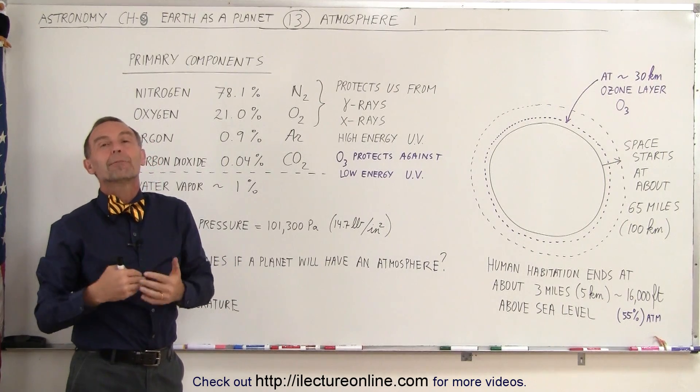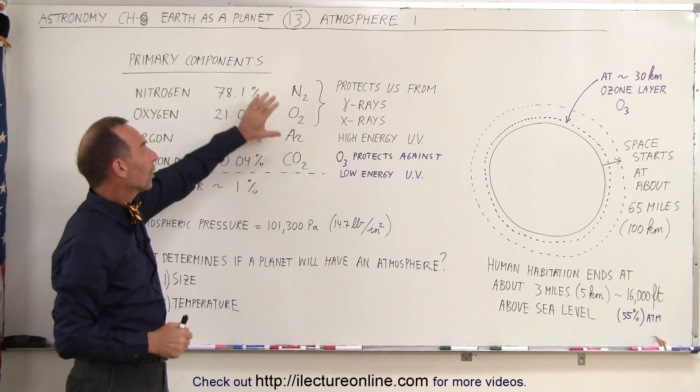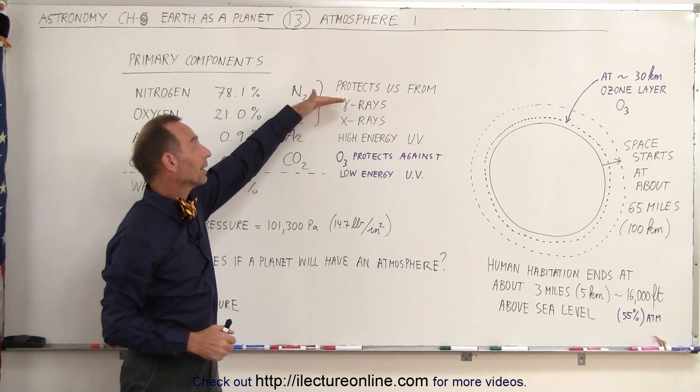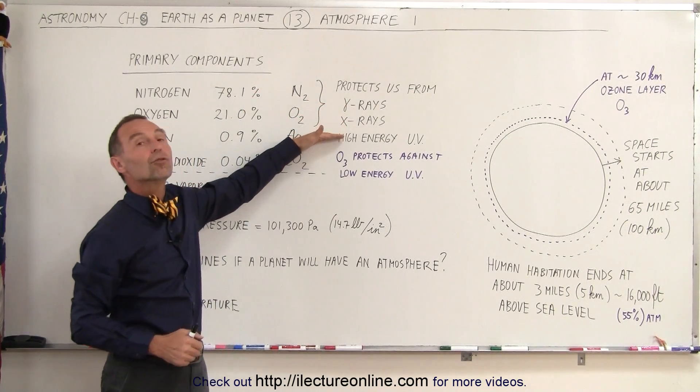Those rays do not reach the surface of the Earth. If they did, life would not be possible on the Earth. So we owe our existence to the fact that nitrogen and oxygen can actually hold back gamma rays, X-rays, and high-energy UV.